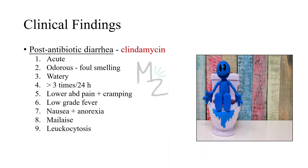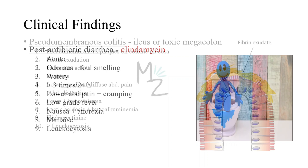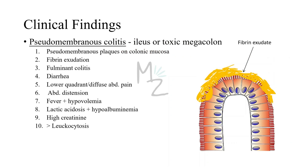There can be nausea, anorexia, and malaise. For pseudomembranous colitis, it increases the risk of ileus or toxic megacolon. There will be pseudomembranous plaques on colonic mucosa, which are fibrin exudates. It can progress to fulminant colitis — a severe form — with diarrhea, lower quadrant or diffuse abdominal pain.